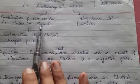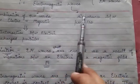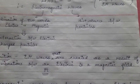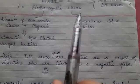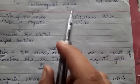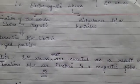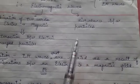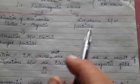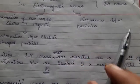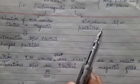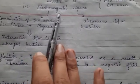Electromagnetic waves are a disturbance between particles. For example, if we put a stone in water, it creates ripples — that disturbance is known as a wave. When we throw something in the water, the disturbance created is what we call a wave.